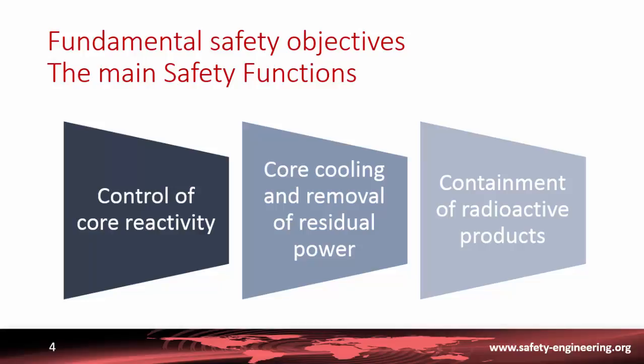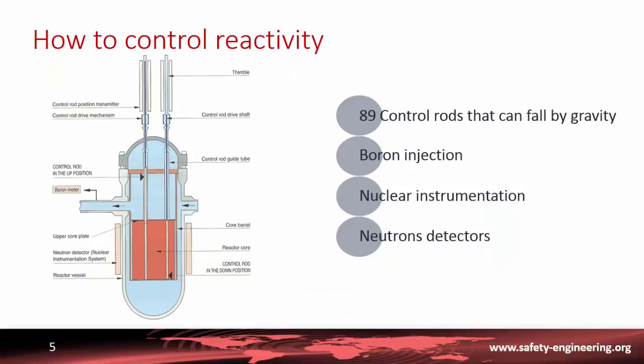These two kinds of events could result in core damage, failure of the containment, and potentially radioactive releases. So the fundamental safety objective is to keep permanently three main safety functions: first, the control of core reactivity, second, core cooling and removal of residual power, and third, the containment of radioactive products.